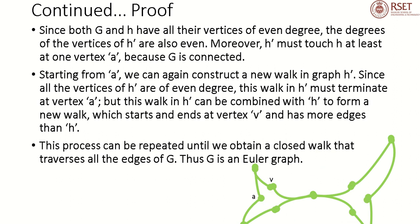Starting from A, we can again construct a new walk in the graph H'. Since all the vertices of H' are of even degree, this walk in H' must terminate at vertex A. But this walk in H' can be combined with H to form a new walk. This walk will start and end at the vertex V as shown in the figure and has more edges than H. This process can be repeated until we obtain a closed walk that traverses all the edges of G. Thus, G is an Euler Graph.